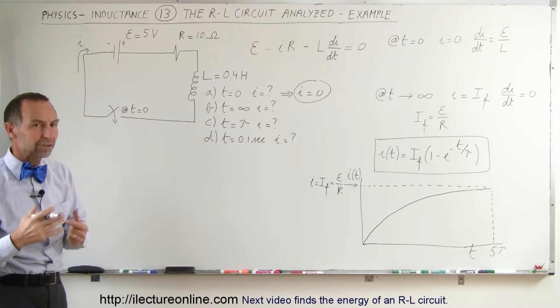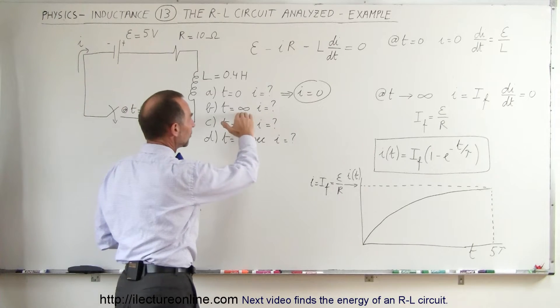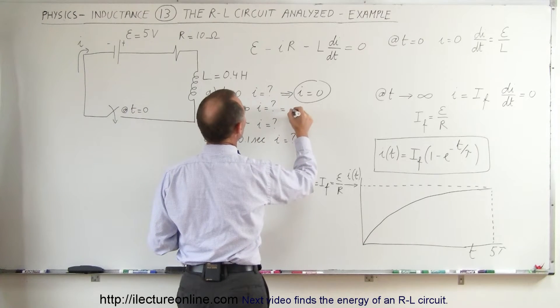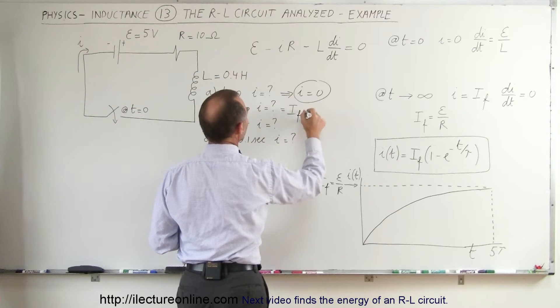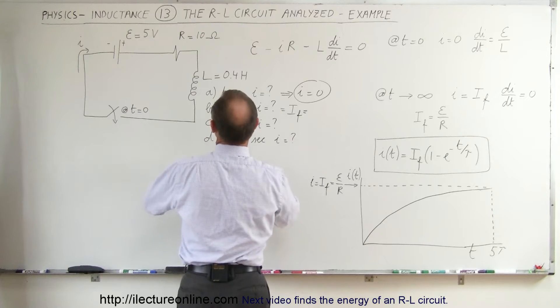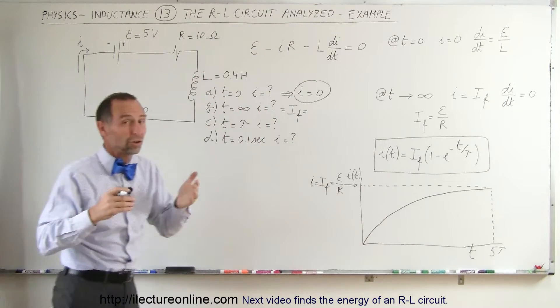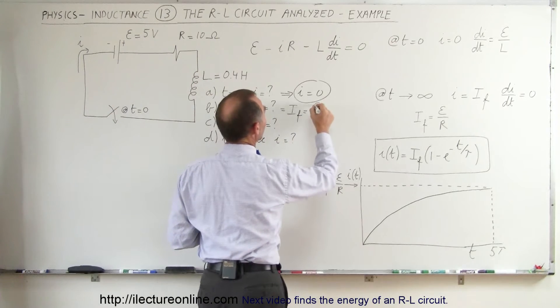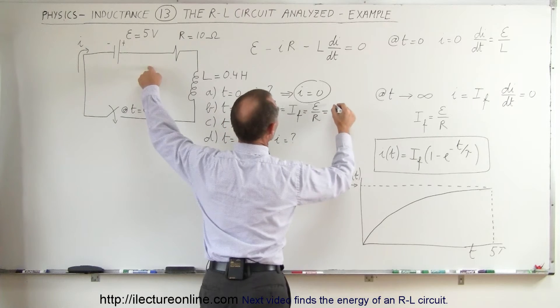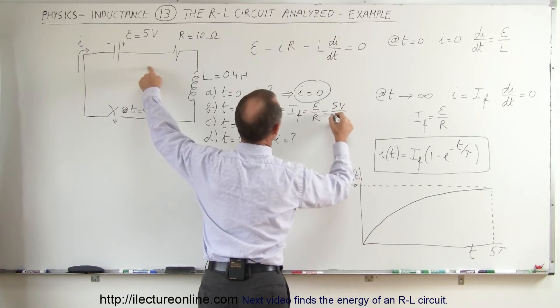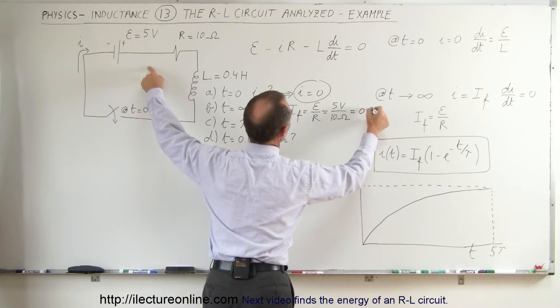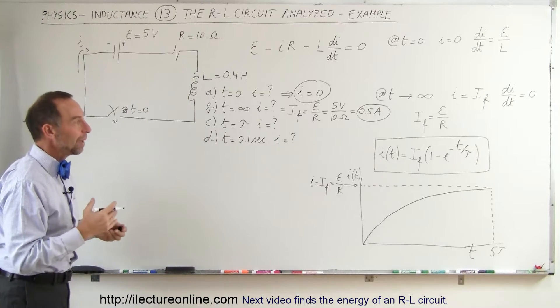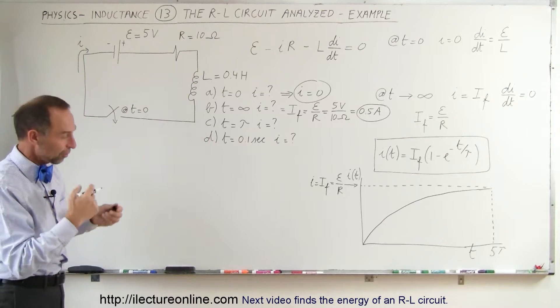What about at the final value? When time has gone by, a sufficient amount of time has gone by so that i has reached its final value, so i then would be equal to i final. And i final is simply defined as the case where the inductor no longer opposes a change because there's no longer a change in the current, it simply becomes a resistor circuit. And so with Ohm's Law, we can say it's equal to E over R. In this case, the voltage would be 5 volts and the resistance is 10 ohms and that would be 0.5 amps. So, at steady-state value, when a sufficient amount of time has passed, the current will have reached the value of 0.5 amps.